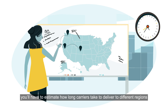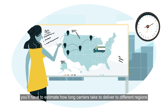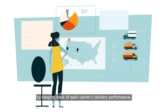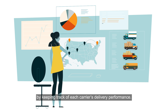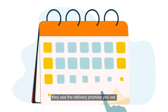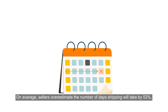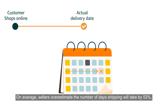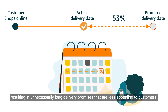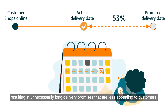To achieve this, you'll have to estimate how long carriers take to deliver to different regions by keeping track of each carrier's delivery performance. When customers shop in the Amazon store, they see the delivery promise you set. On average, sellers overestimate the number of days shipping will take by 53%, resulting in unnecessarily long delivery promises that are less appealing to customers.